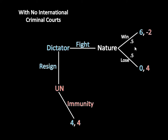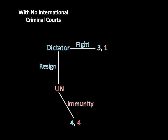So 0.5 times 6 equals 3, and 0.5 times 0 equals 0, so 3 plus 0 equals 3. The dictator's payoff for fighting is 3. For the United Nations: 0.5 times negative 2 is negative 1, and 0.5 times 4 is 2, so negative 1 plus 2 is 1. And if I did my calculations right, it's going to match up to this slide right here — and sure enough, I did it correctly.